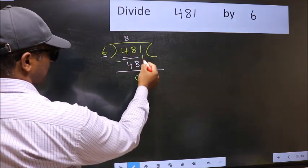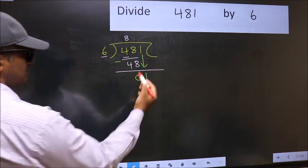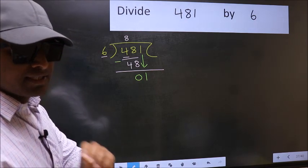After this, bring down the beside number. So, 1 down. After this step, the mistake happens. And the mistake is this.